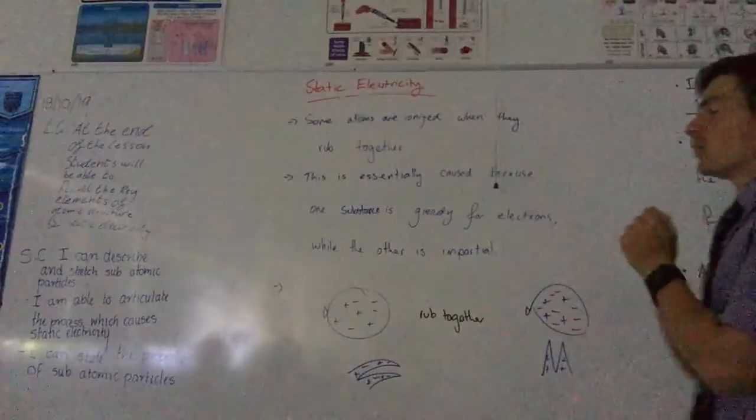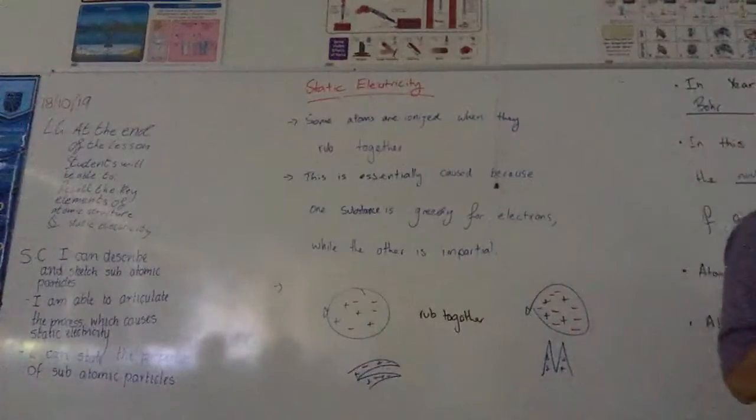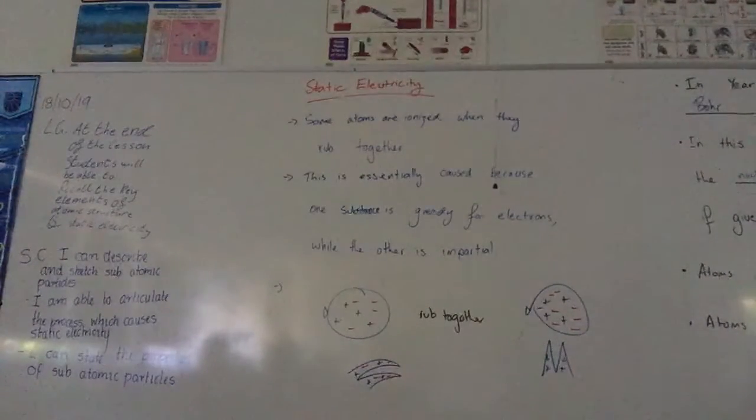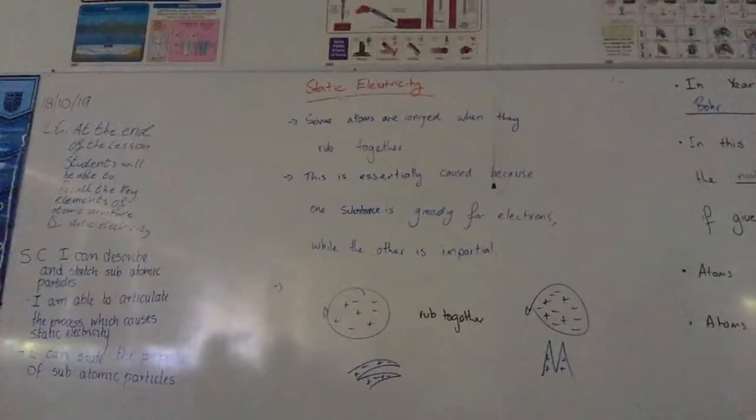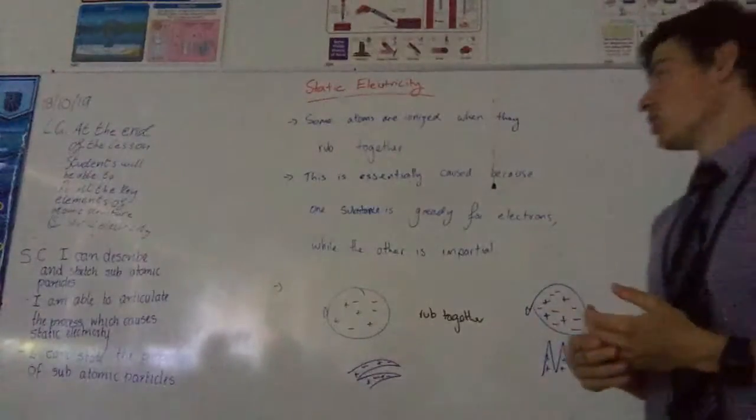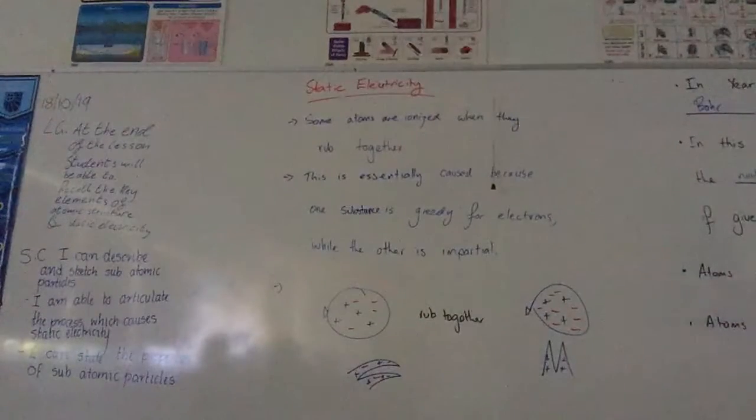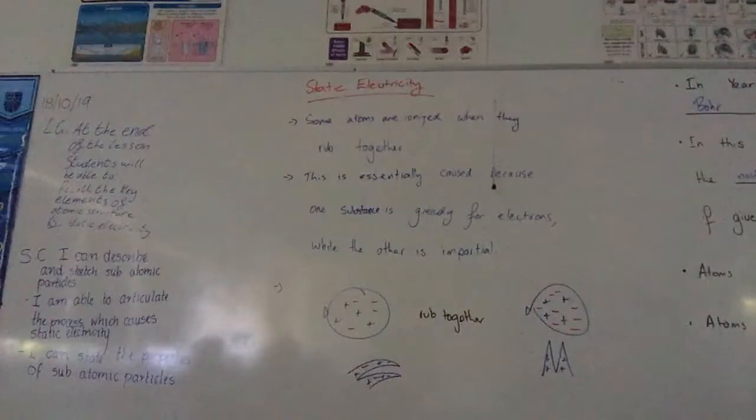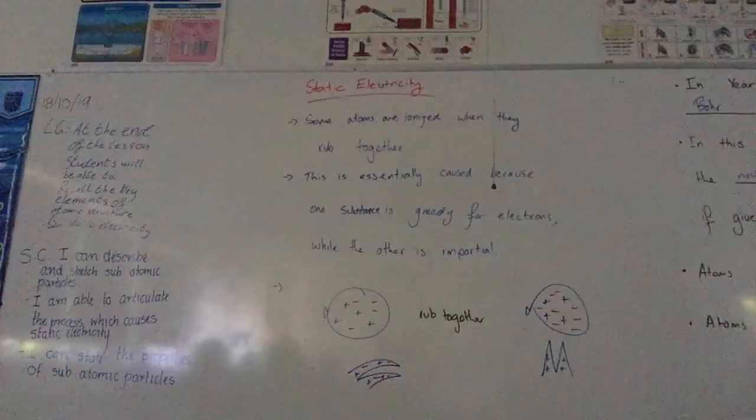So when you rub objects together, one object will gain electrons while the other one loses them. When you pull them apart, you've got a negatively charged object and a positively charged object.